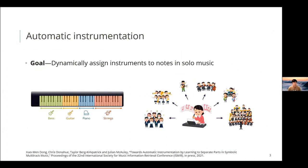In this work, we are interested in automatic instrumentation. This is a new task. We define it as dynamically assigning instruments to notes in solo music. This has potentially two use cases. First, as shown on the left, modern keyboards have the function of zoning where we assign different zones of pitches. When the musician plays the keyboard, it sounds like you're playing multiple instruments at the same time.